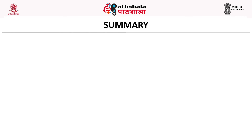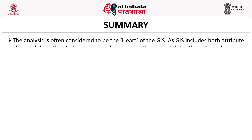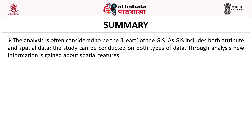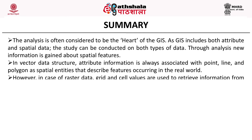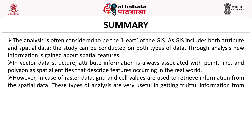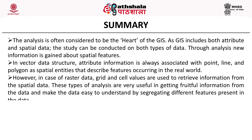As GIS includes both attribute and spatial data, the study can be conducted on both data types. Thorough analysis of these data models reveals new information about spatial features. In vector data structure, attribute information is always associated with point, line and polygon as spatial entities that describe features in the real world. In raster data, grid and cell values are used to retrieve information from spatial data. These analyses are very useful for understanding data models and making data easy to understand by segregating different features. The raster data model applies to any data representing continuity such as elevation, soil moisture, soil types or soil mapping.